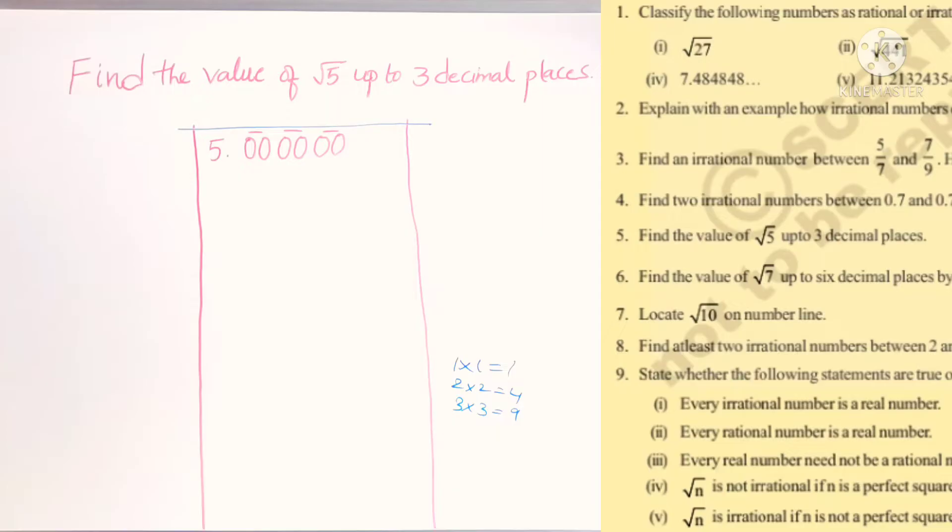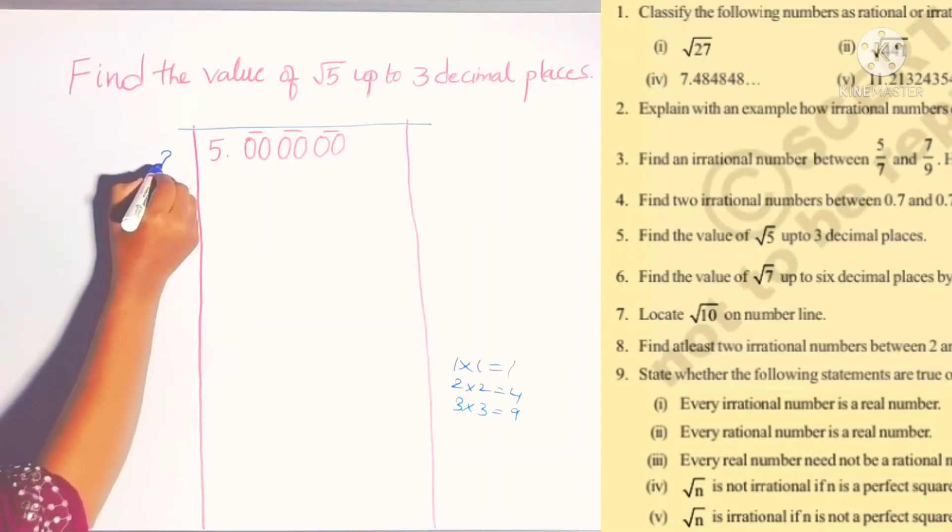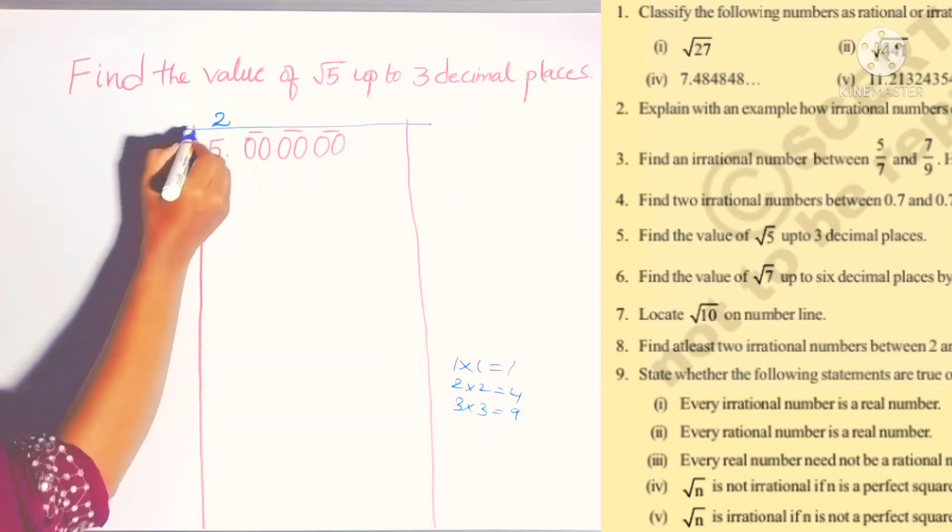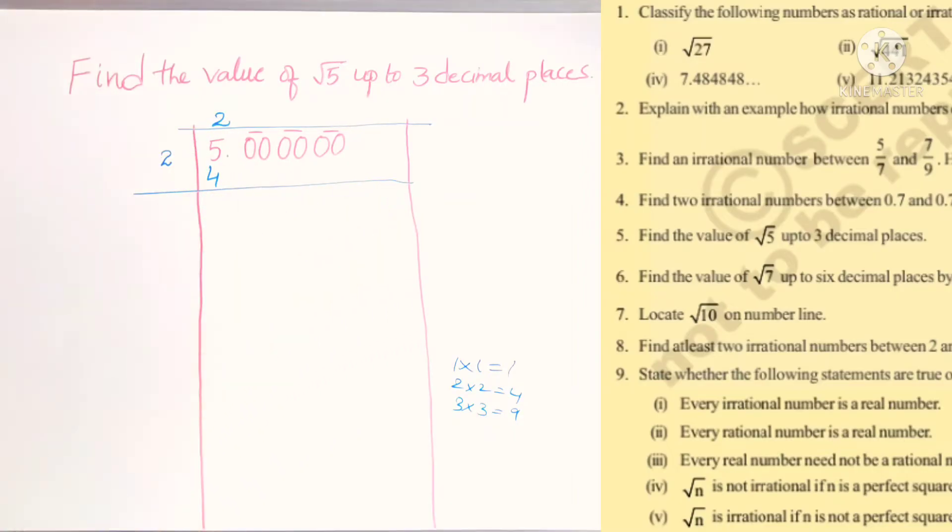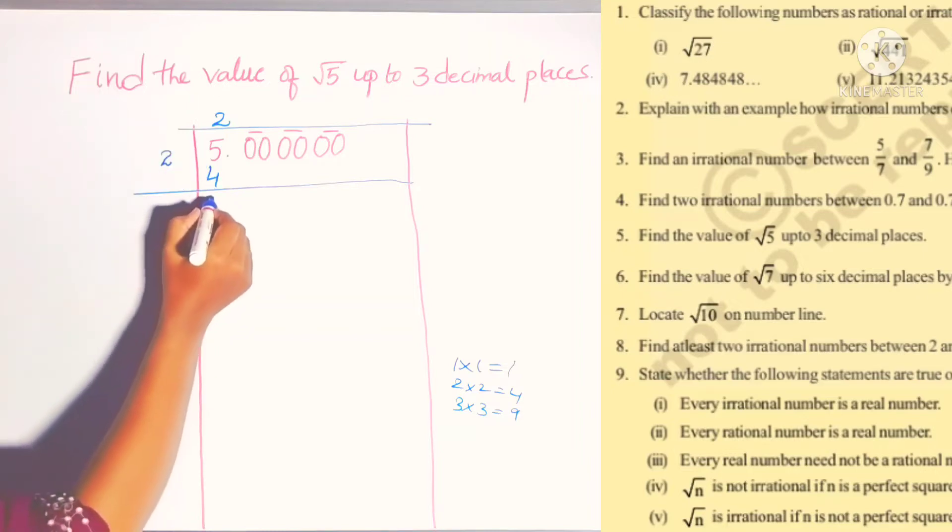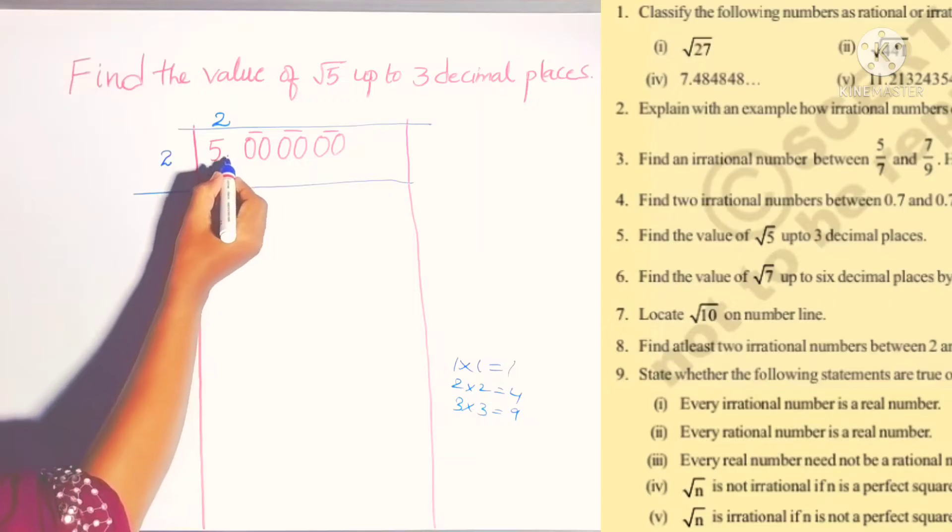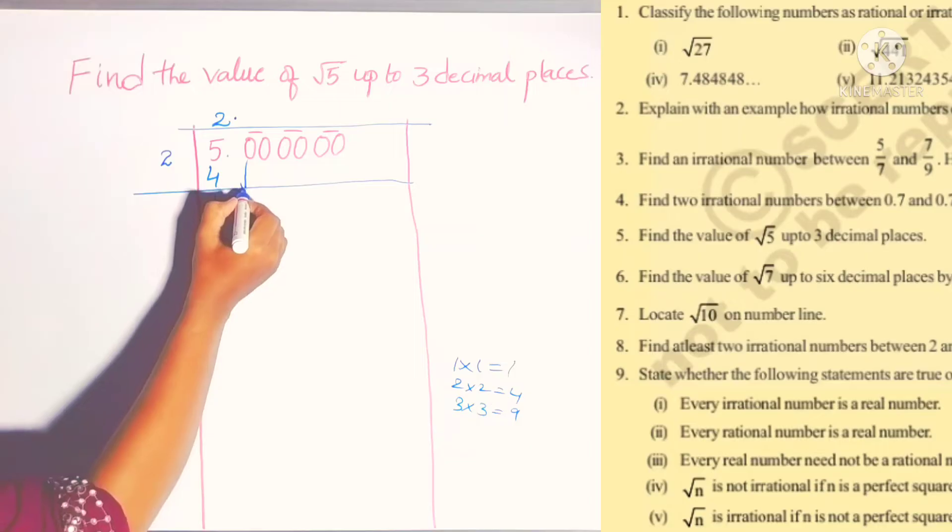Now if you check, 2 into 2 is 4, which is nearest to this. Here we write quotient and here divisor. So I wrote 2 here, 2 times 2 is 4. After subtracting, we get 5 minus 4 equals 1.